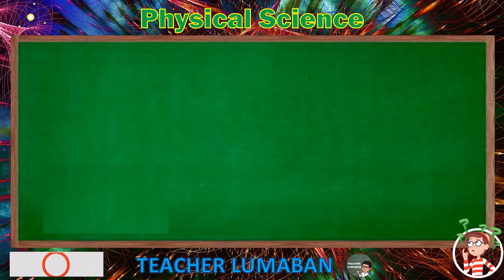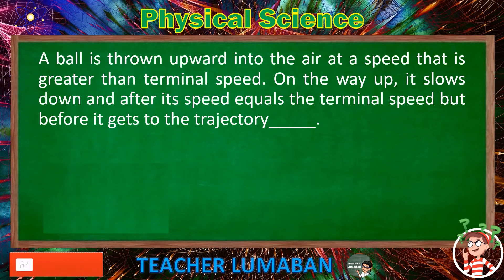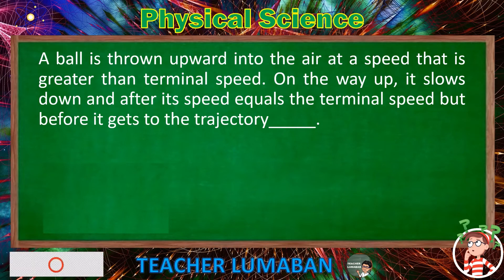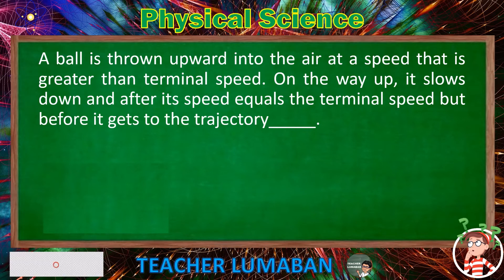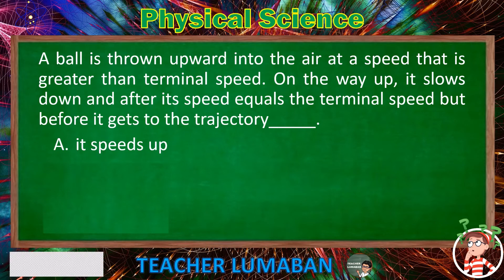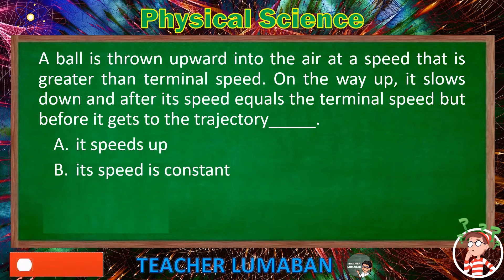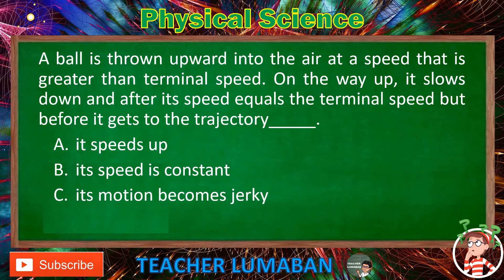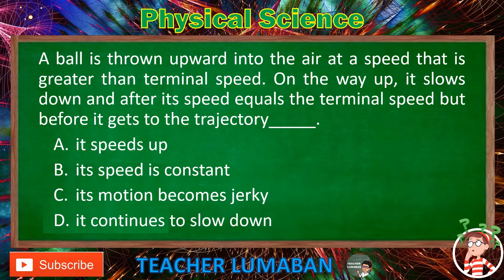A ball is thrown upward into the air at a speed greater than terminal speed. On the way up, it slows down, and after its speed equals the terminal speed but before it gets to the top of its trajectory: Letter A: It speeds up. Letter B: Its speed is constant. Letter C: Its motion becomes jerky. Letter D: It continues to slow down.